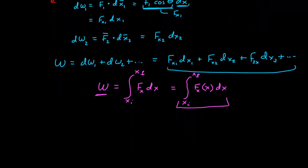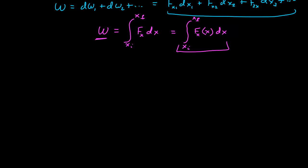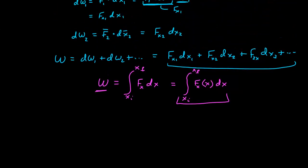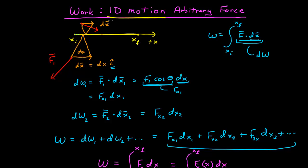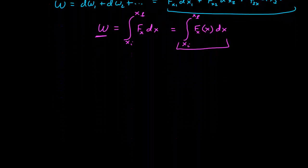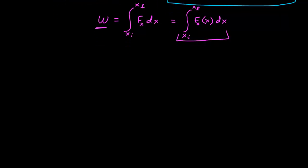Let's do an example. This is now slightly more complicated than with a constant force, but it's not too bad since we're still moving in one dimension — that's really the key simplification. Let's calculate the work done by a spring. You have to be very specific when calculating work about agents and objects: which agent is exerting the force and thus doing the work on what object. In this case, we're going to calculate the work done by the spring on some object.